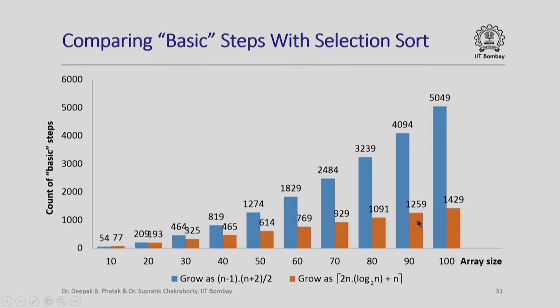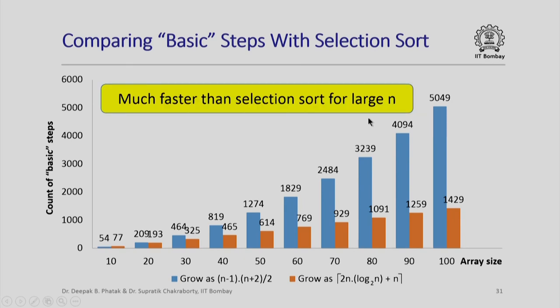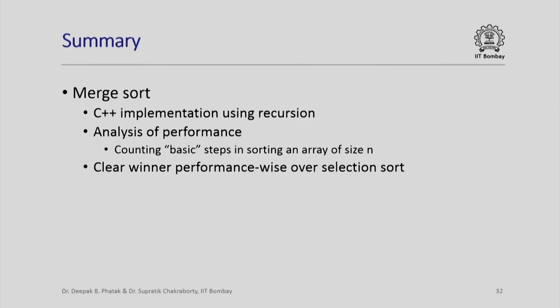I have plotted the comparison for array sizes from 10 through 100. The blue bars show how basic steps increase for selection sort; the orange bars show the increase for merge sort. Clearly merge sort is a winner — it is expected to be much faster than selection sort for large n. In summary, we looked at a C++ implementation of merge sort using recursion, analyzed its performance by counting basic steps, and confirmed that merge sort outperforms selection sort for large n.